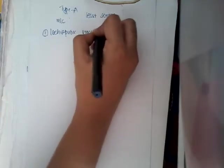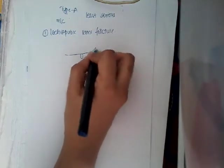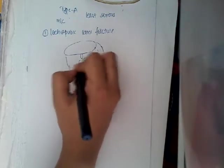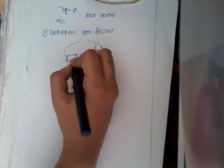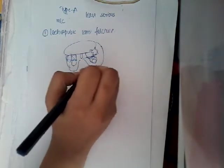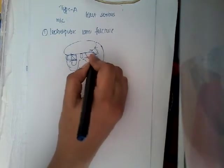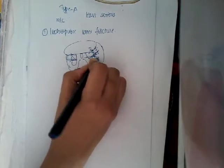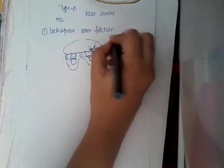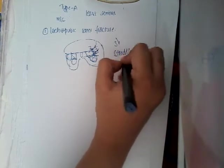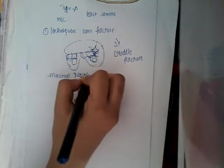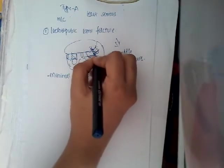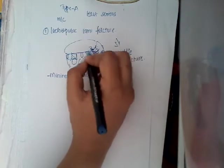The first subtype of Type A is ischiopubic rami fracture. Here the fracture is in the ischiopubic rami. This is the ischial bone and this is the pubis — this rami is called the ischiopubic rami. This is also called a straddle fracture. There is minimal displacement, and the fracture of the rami can extend into the acetabulum.